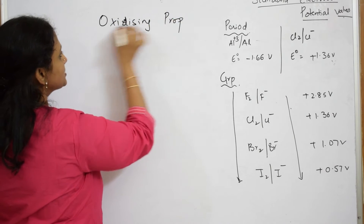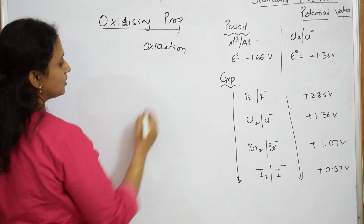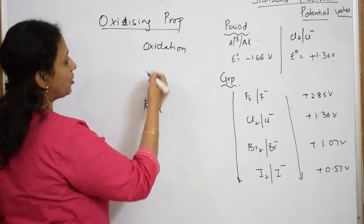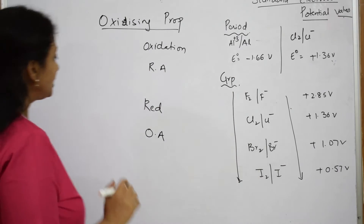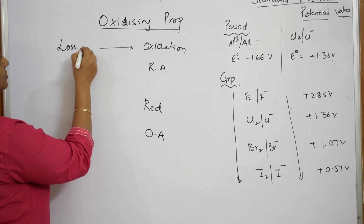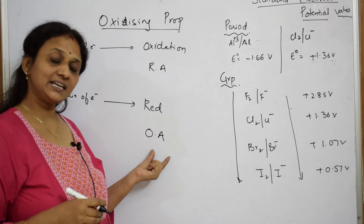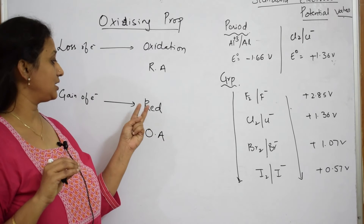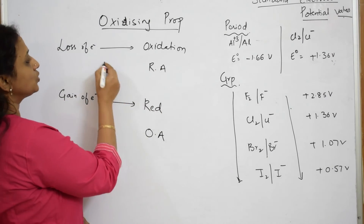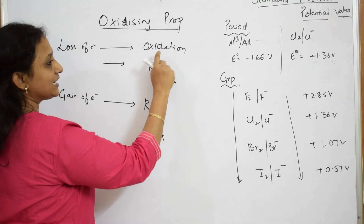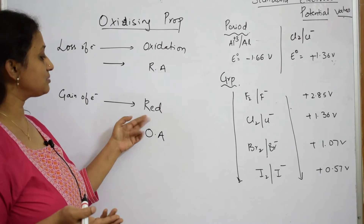What actually is oxidizing property? Whenever I speak about oxidizing property, I have to know what is the process of oxidation, what is the process of reduction, what is the meaning of oxidizing agent, and what is the meaning of reducing agent. Oxidation means loss of electrons; reduction means gain of electrons. Oxidizing agents are those which undergo reduction — they get reduced because they are gaining electrons. Reducing agents are those which get oxidized because they have lost electrons. Remember this — it is opposite. Oxidation is the reducing agent; reduction is the oxidizing agent.